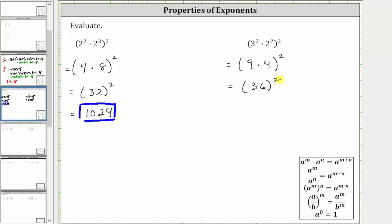This simplifies to the square of 36, which is equal to 36 times 36, which is 1296.